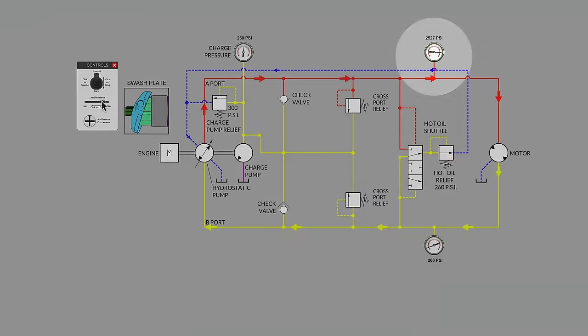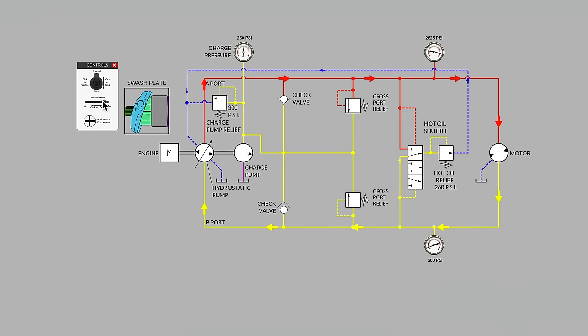It started out in the yellow range and moved through orange and it's up to red. And of course, when I move the load slider all the way to the right, watch what happens. All of a sudden, the counter torque at that motor, the amount of work that we're asking that motor to do is too great. And we sense that as an overpressure condition. What happened?